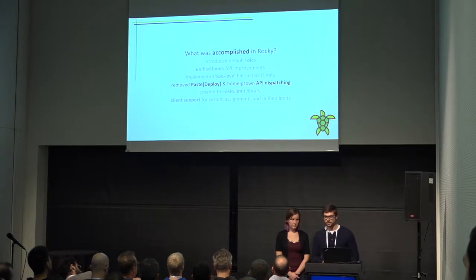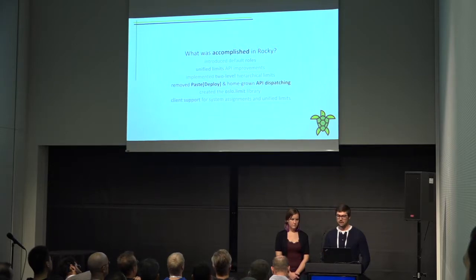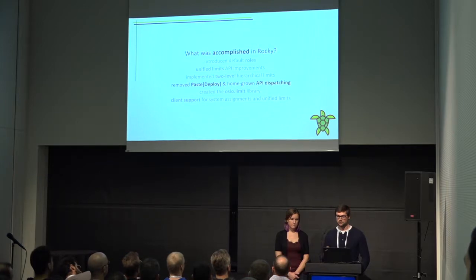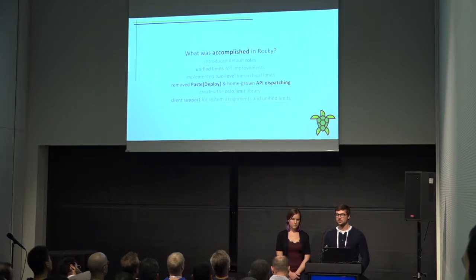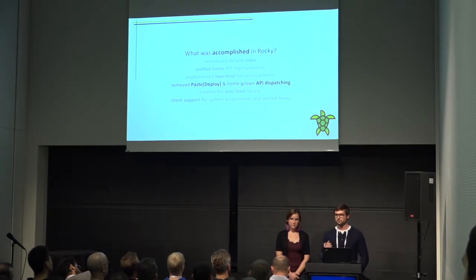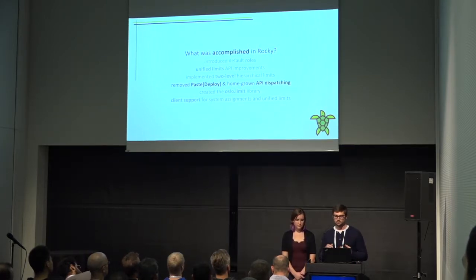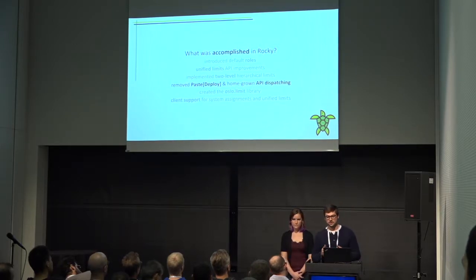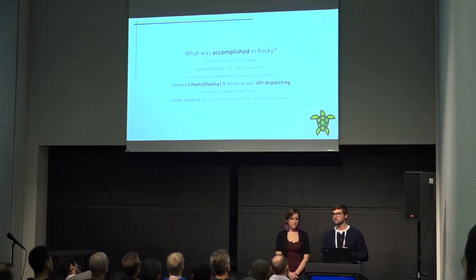We also embarked on a really large refactor to remove Keystone's dependency on Python paste and paste deploy. This is ultimately because we were removing a bunch of code that was V2-specific for Queens, and it gave us a good opportunity to remove some homegrown API dispatching code in Keystone. So we've transitioned that to working with Flask instead. This is pretty transparent to end users, but it simplifies our code base — especially our API layer — makes it easier for people to understand, and makes it easier for us to implement new features specific to federation and rolling out more granular policies.